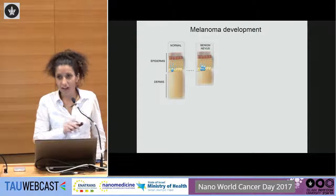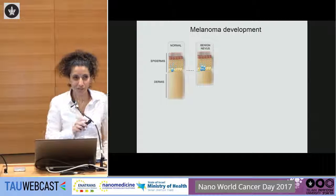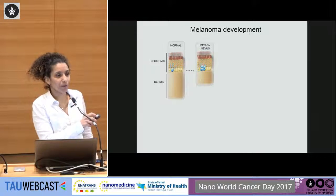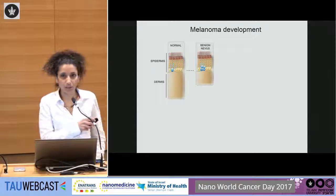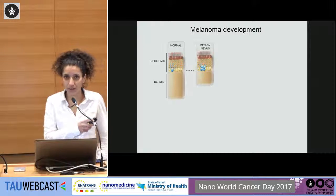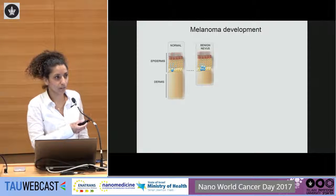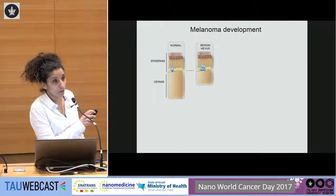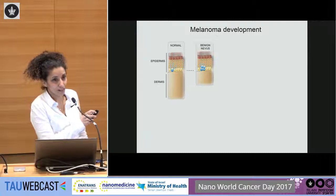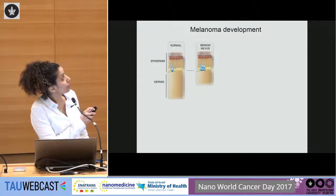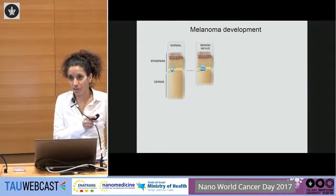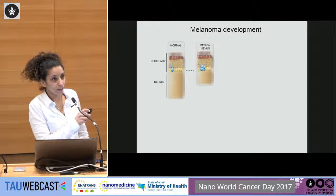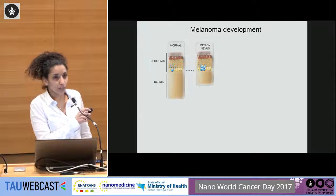Half of my lab is studying the normal function of the skin. But once there is a malignant transformation and skin cancer appears, there can be three types of skin cancer. If the basal cell goes wrong, it's called basal cell carcinoma. If the squamous cell goes wrong, it's squamous cell carcinoma. But when the melanocyte goes wrong, one would get melanoma.